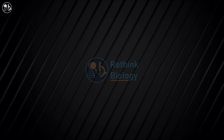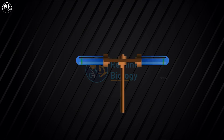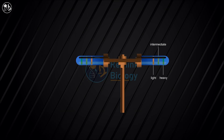DNA was extracted from each sample and its density was determined by mixing it with cesium chloride and spinning in an ultracentrifuge. As the tube spins, a linear concentration gradient of cesium chloride forms, with the lightest density at the top and the heaviest at the bottom. The DNA comes to equilibrium in the gradient where its density equals the density of the surrounding cesium chloride. If all DNA molecules in the sample are of the same density, a single band of DNA results.